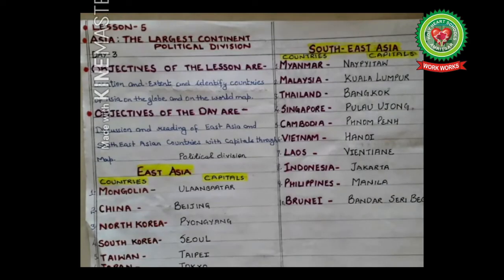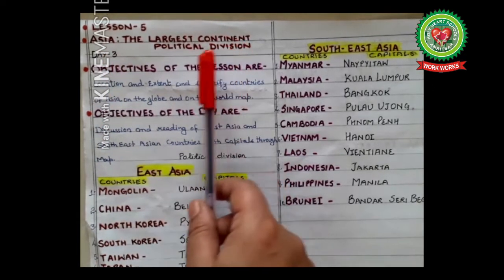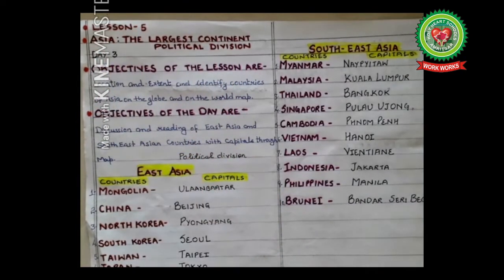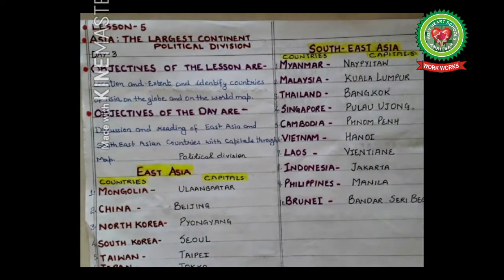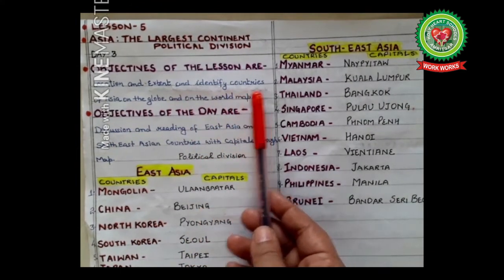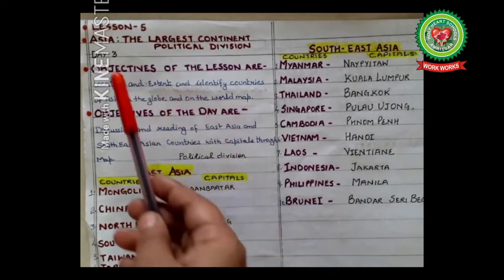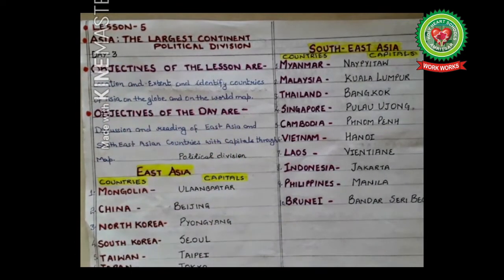Hello students, welcome to the geography class. Today I'm going to start with the same topic: Asia, the largest continent, political division. This is your lesson number five of your geography book. The objectives of the lesson are location and extent, and to identify countries of Asia on the globe and on the world map. In my last lecture, I gave you the introduction of this chapter with the help of a map, and we discussed how many continents there are, latitudes, longitude, size, boundaries of Asia, coastline, and islands.